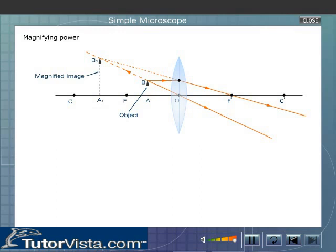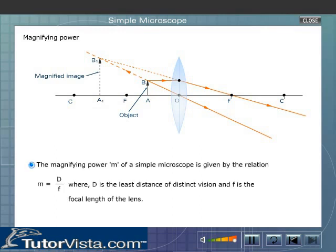Magnifying Power. The magnifying power m of a simple microscope is given by the relation m = D/F, where D is the least distance of distinct vision and F is the focal length of the lens.